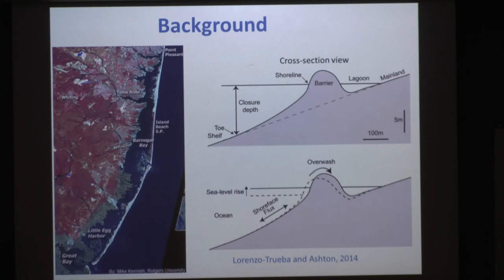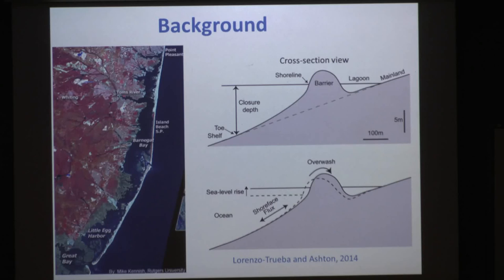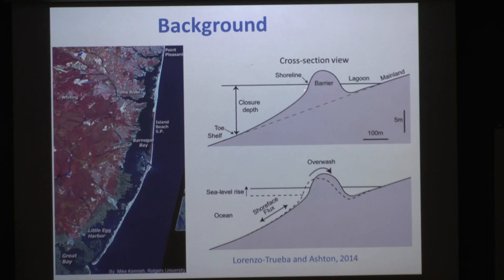Now I'm going to move to barrier islands — work I started during my postdoc with Andrew Ashton at Woods Hole Oceanographic Institution and continue in New Jersey. About 70% of the New Jersey coast is barrier island, making it a good place to work on this. A cross-section typically shows three regions: the subaqueous region characterized by the shoreface, continuously reworked by waves and tides and delimited by the shoreline and the shoreface toe; and the subareal portion of the barrier where in New Jersey you find the highways and hotels.